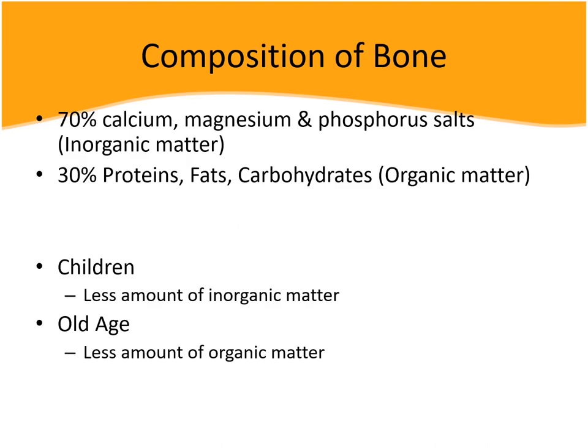The composition of bones: in a fully grown person, 70% of the bone is formed with calcium, magnesium, and phosphorus, and the remaining 30% is proteins, fats, and carbohydrates. The 70% minerals give strength to the bone, and the remaining 30% gives slight flexibility. So our bones are strong and hard but at the same time slightly flexible.